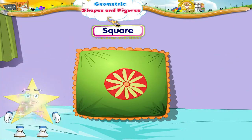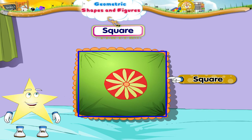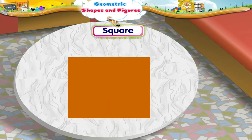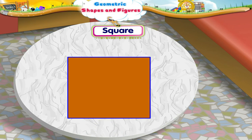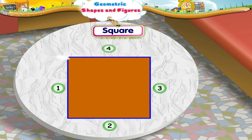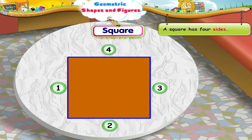Square! Look at this pillow. It has the shape of a square. Let us learn more about the square. Look at this square-shaped paper. Let us count its sides: one, two, three, four. So, a square has four sides.